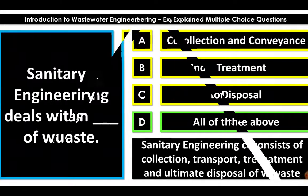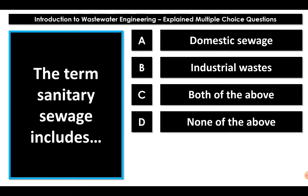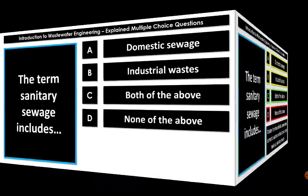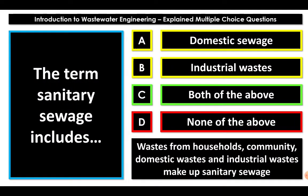Question two: the term sanitary sewage includes — does it include domestic sewage, industrial waste, both of the above, or none of the above? The term sanitary sewage includes domestic as well as industrial waste. Waste from household, community, and domestic use, combined with industrial waste, makes up sanitary sewage.